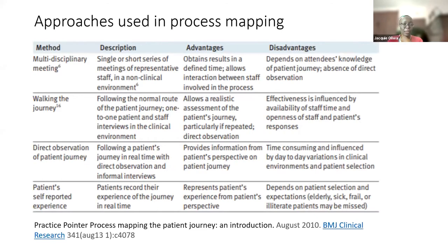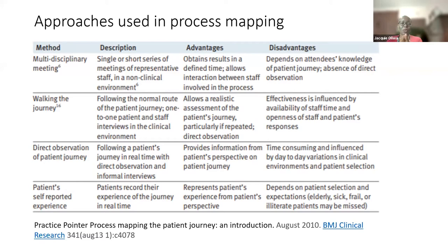There are various approaches used in process mapping. One option is a multidisciplinary meeting, where you have around four to five clinical staff involved in provision of care — especially for the particular condition you're studying — and then either a single or short series of meetings, preferably in a non-clinical environment. The advantages are that you can get results in a defined time and it allows interaction, as they can talk amongst each other and use post-its as they chart out the journey as they understand it.